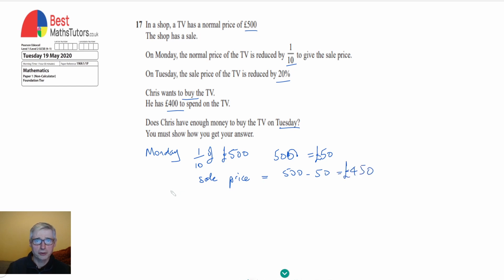Now we're going to find the sale price on the Tuesday and for that we've got to find out what 20% is. So we need to reduce the current price by 20%.